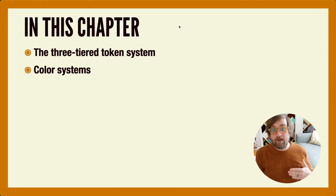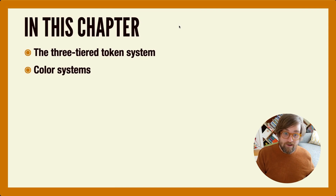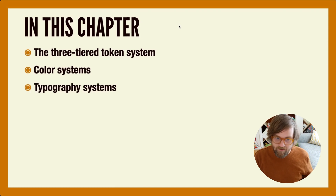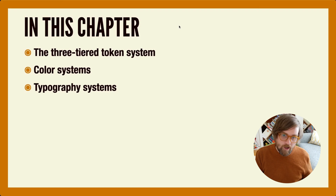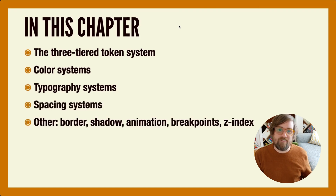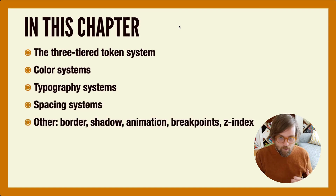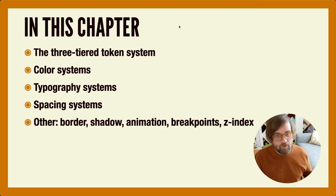These component-specific tokens are the kind of weird ones that don't abide by the rules. We're going to be covering that through the lens of color systems, typography systems, spacing systems, and other tokens — border, shadow, animation, breakpoints, z-index, and beyond.